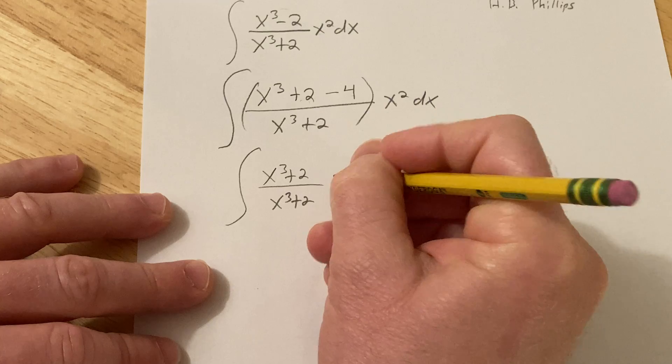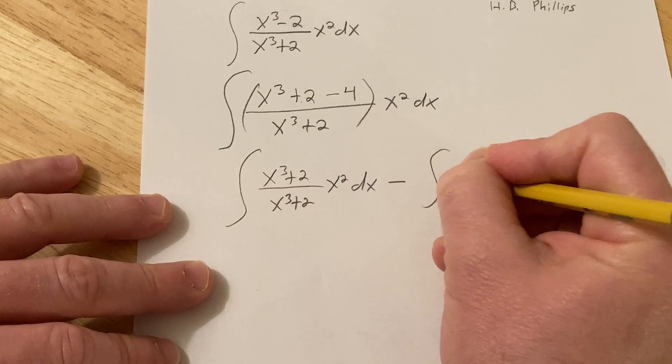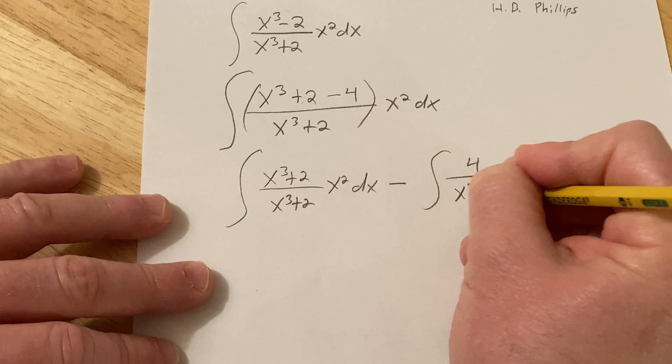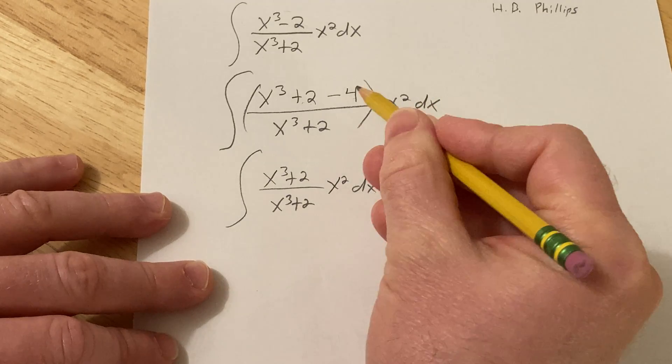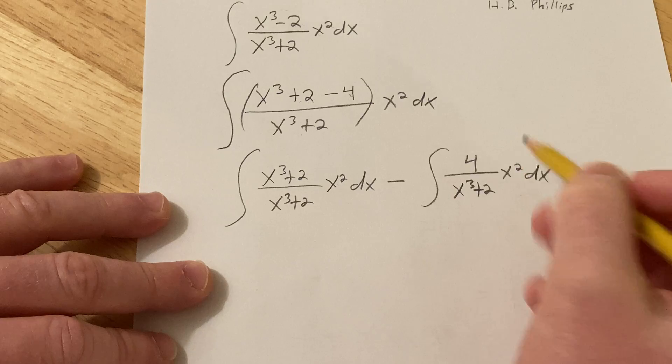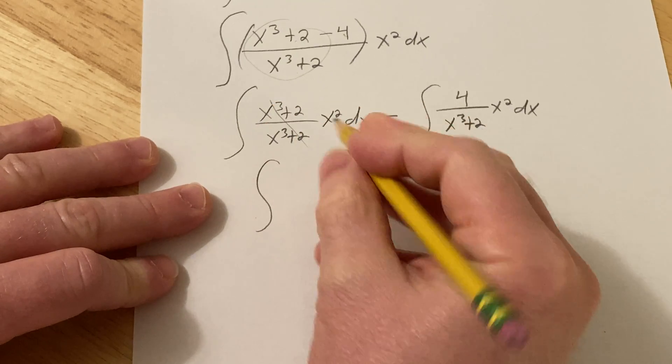Then you still have the x squared dx minus 4 over x cubed plus 2 x squared dx, right? Because it's this over this that's here and then you have the x squared and then this times this is here. So this is just going to be x squared dx.